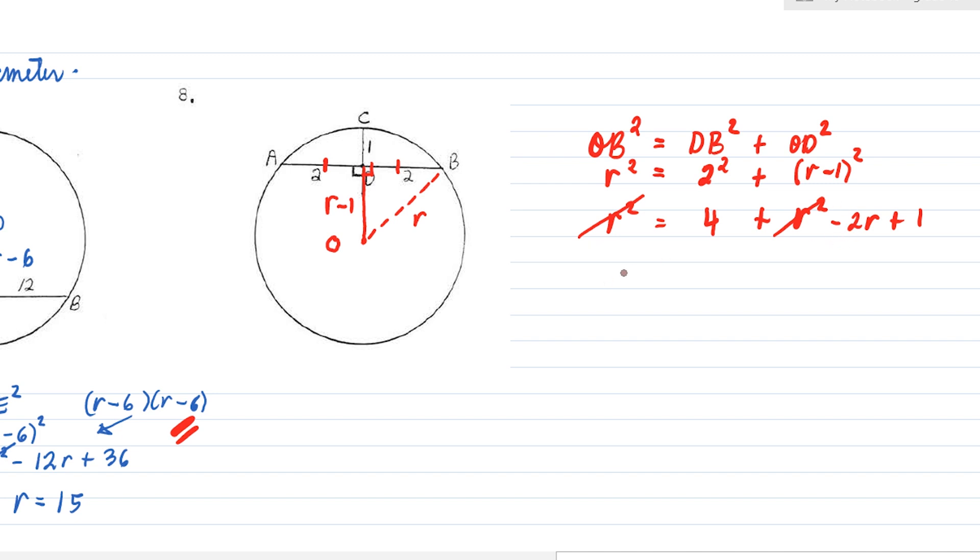So let's transpose 2R to the other side. We have positive 2R equals 4 plus 1. That's 5. Therefore, R equals 5 over 2. But since we're looking for the diameter, the diameter is twice of this. The diameter is actually equal to 5 units.